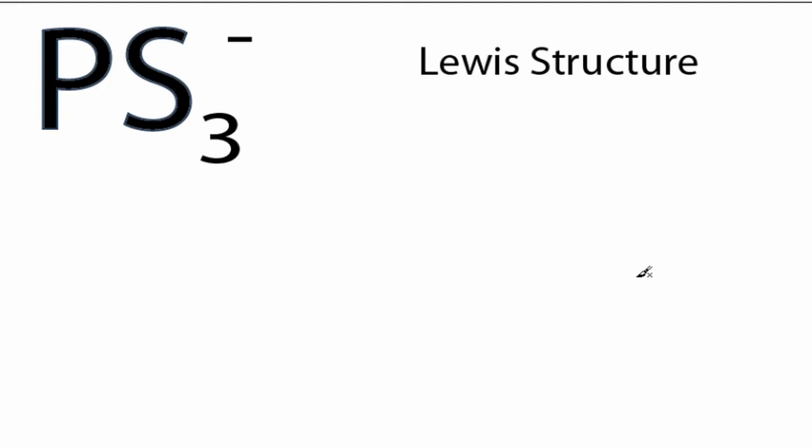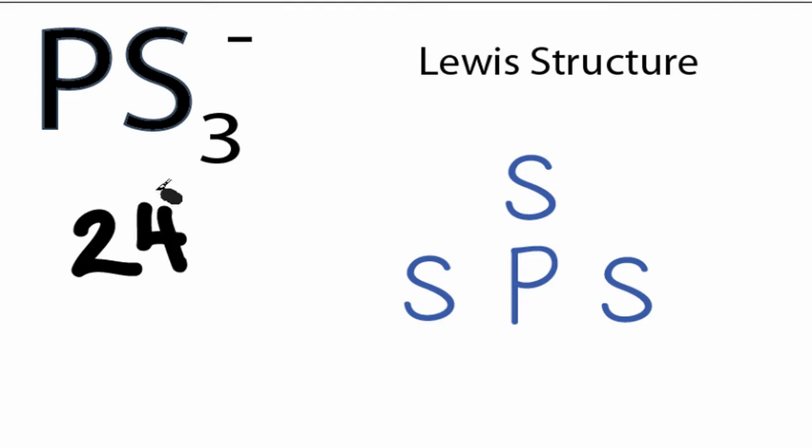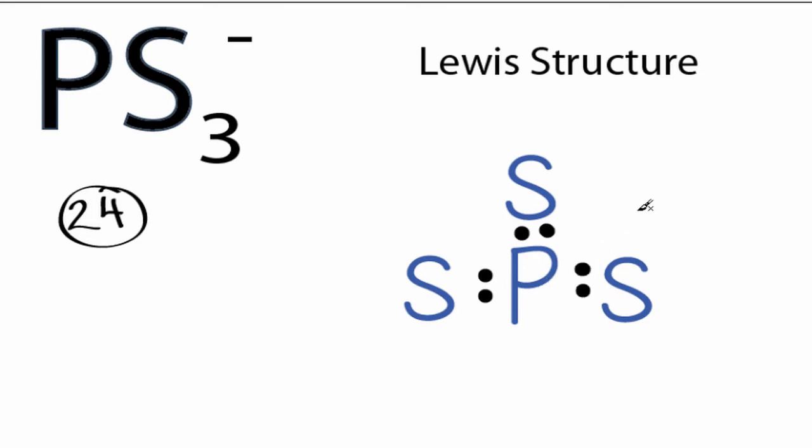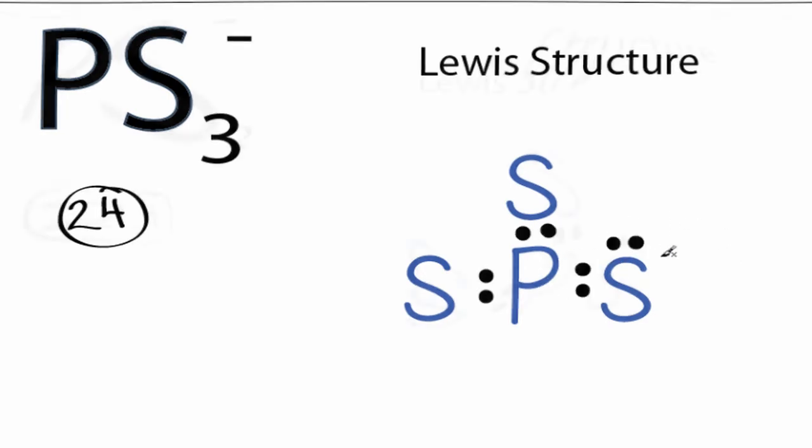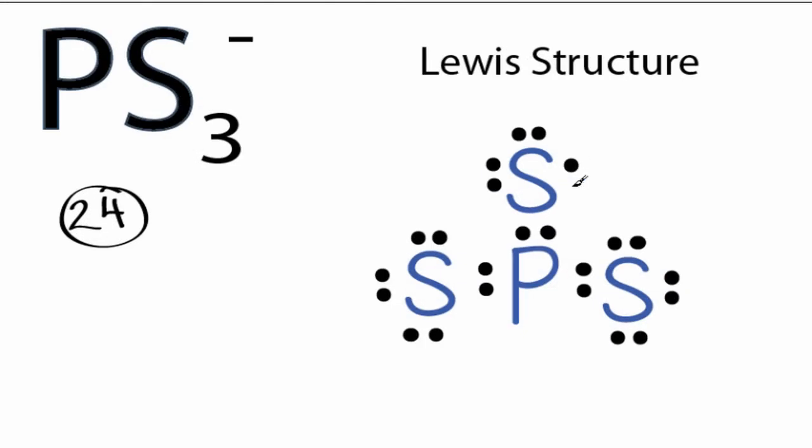Since phosphorus is the least electronegative, that'll go in the center. We have a total of 24 valence electrons for the PS3- Lewis structure. We'll put two between these atoms to form our chemical bonds, and then we'll go around the sulfur. So we have six, eight, and 24.